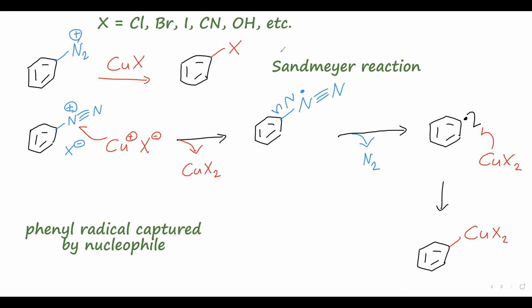And finally, this will decompose, losing one equivalent of CuX, so that regenerates one equivalent of that CuX that we used in the beginning. And we will leave us with the substituted benzene, where X is now bonded to the ring. So this is another quite useful, very mild reaction conditions way to form substituted benzenes with nucleophiles.